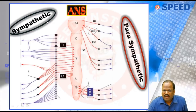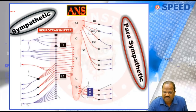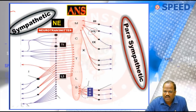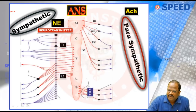When we talk about sympathetic and parasympathetic, the first thing you should know is: what is the neurotransmitter? The neurotransmitter in sympathetic will be norepinephrine. Similarly, please note, the neurotransmitter in parasympathetic will be acetylcholine.